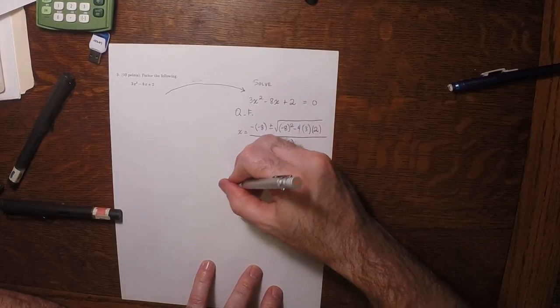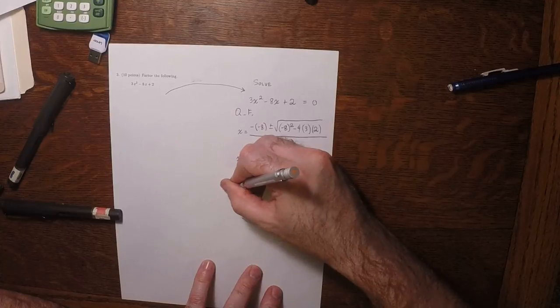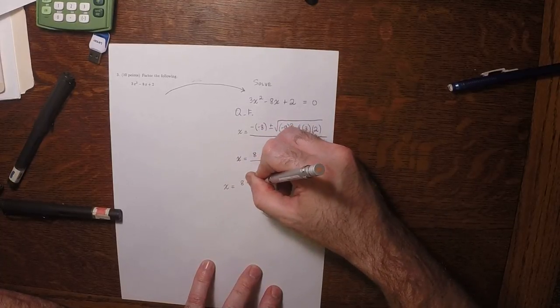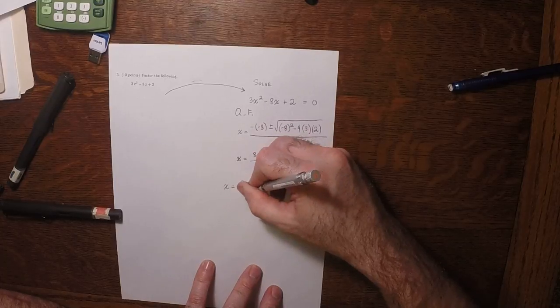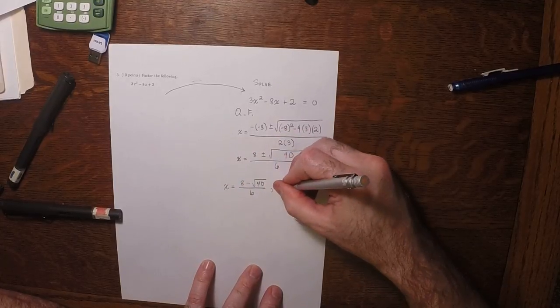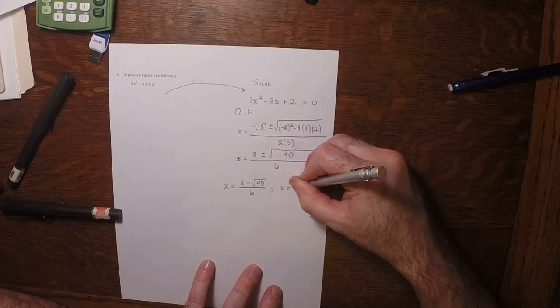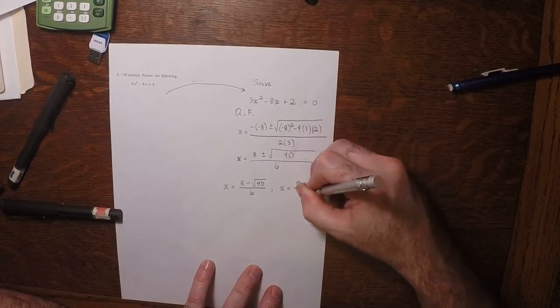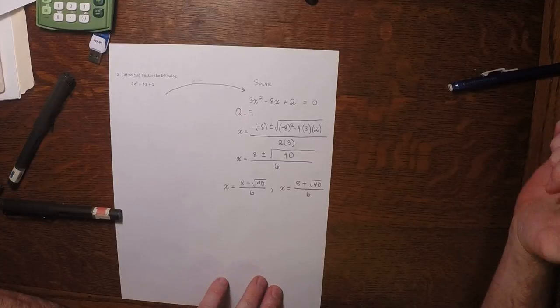So there's two possibilities: x is 8 minus square root 40 over 6, and x is 8 plus the square root of 40 over 6.